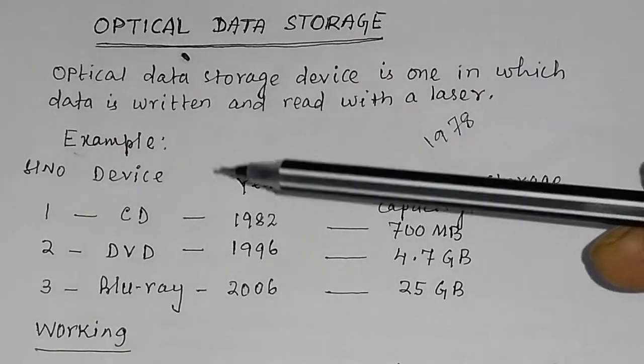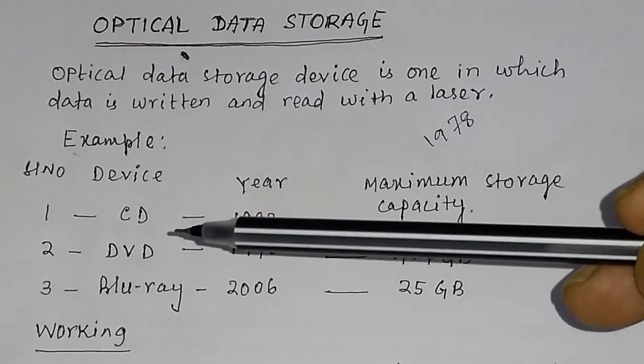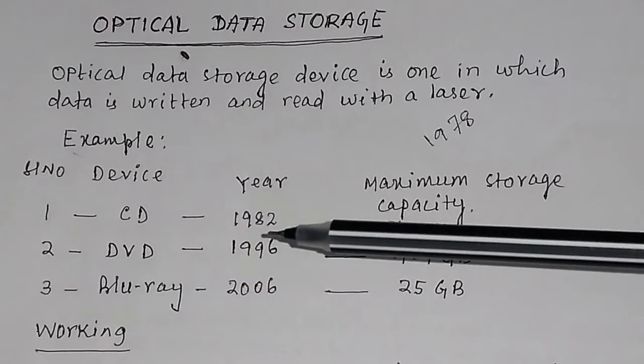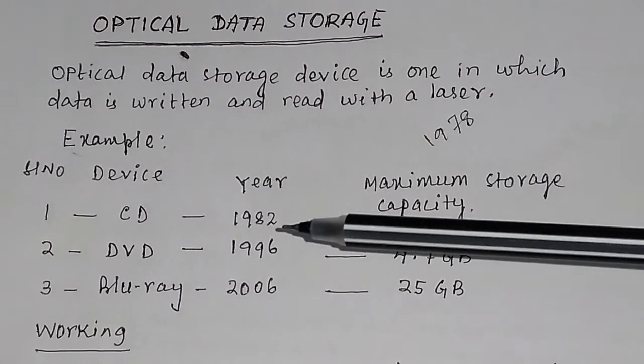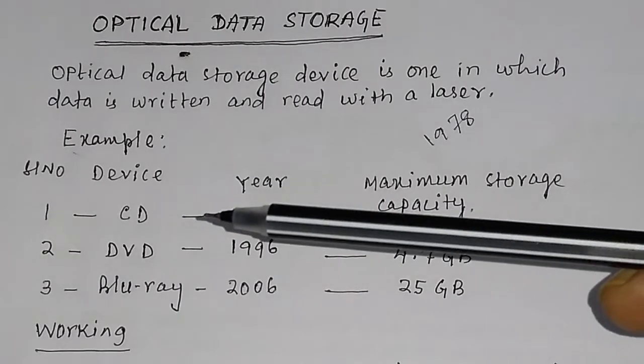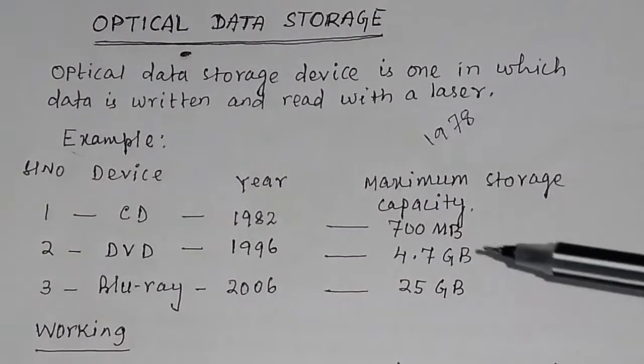Then came CD, that is the compact disc, in the year 1982. Compact disc with maximum capacity 700 megabytes.